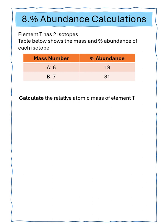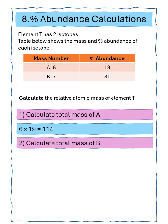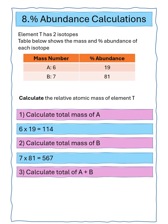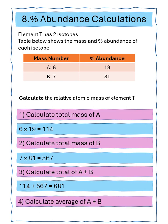Question eight says element T has two isotopes. The table below shows the mass and percentage abundance of each isotope. We've got to calculate the relative atomic mass of element T. Isotope A is 6 times 19, giving 114 in total. Isotope B is 7 times 81, giving 567 in total. The total of A and B is 681. Dividing by 100 gives an average isotope mass of 6.81.